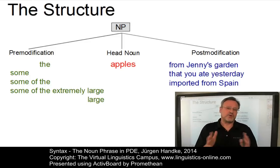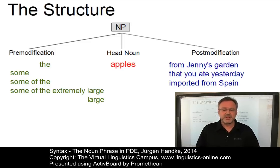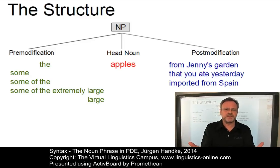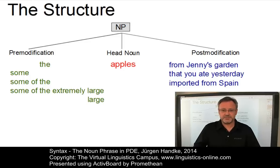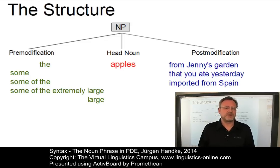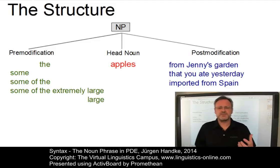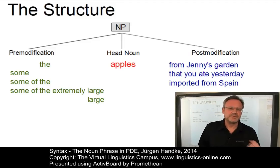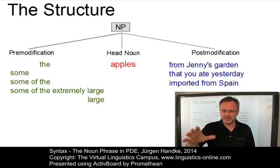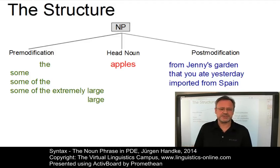Common to all noun phrases is the presence of an obligatory head noun, around which the components cluster. The head dictates congruence — for example, subject-verb agreement — with the rest of the sentence outside the noun phrase. Depending on grammatical and semantic properties, two aspects have to be discussed with regard to head nouns: noun classes and noun features.